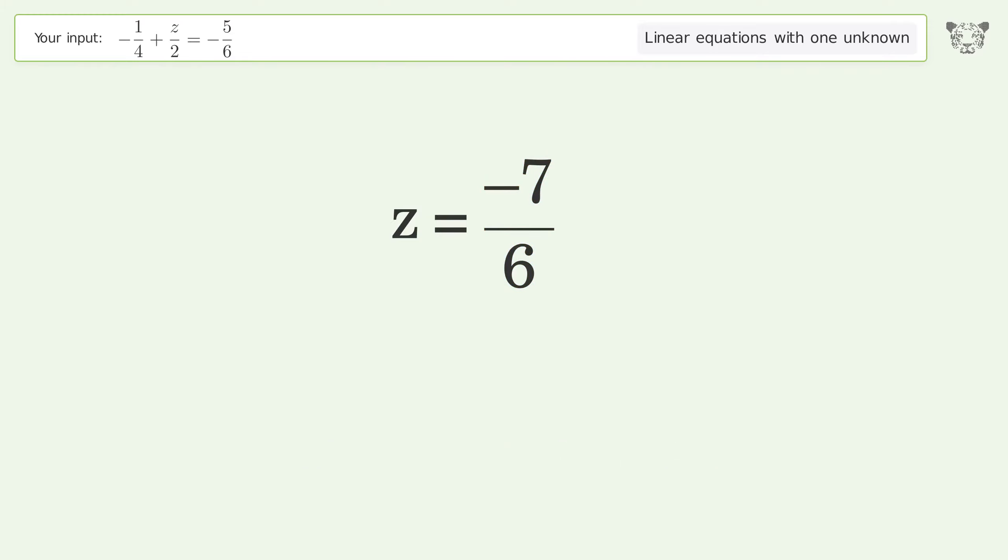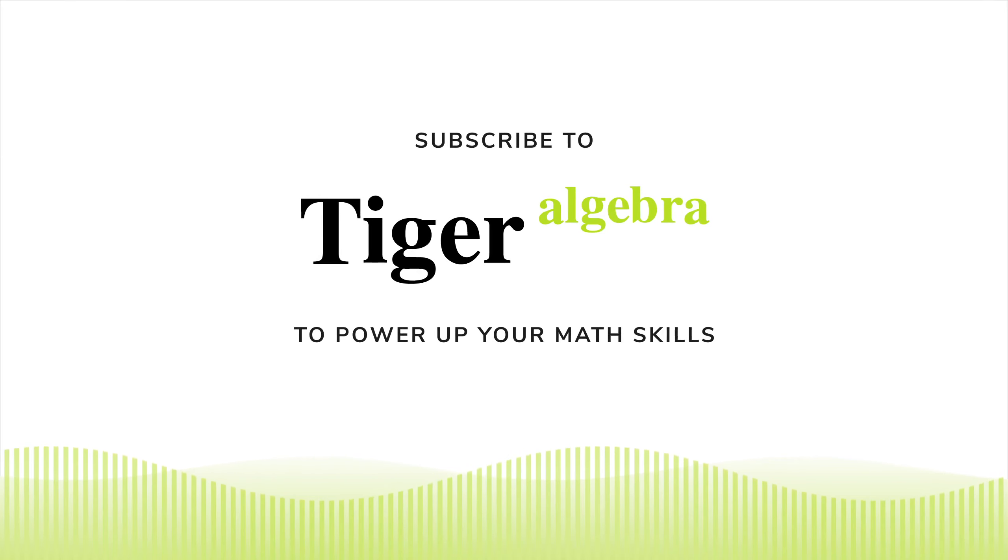And so the final result is z equals negative 7 over 6. We'll see you next time. Thank you.